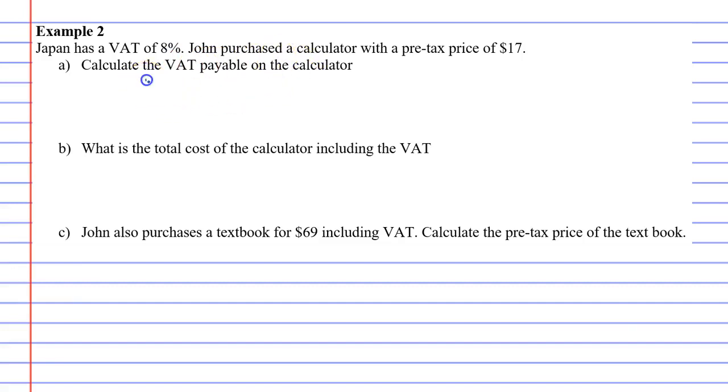That's as simple as taking your percentage, dividing it by 100 and multiplying it by the amount. So our percentage is 8, it's an 8% VAT. Divide by 100 and the amount is 17. And that gives us $1.36.